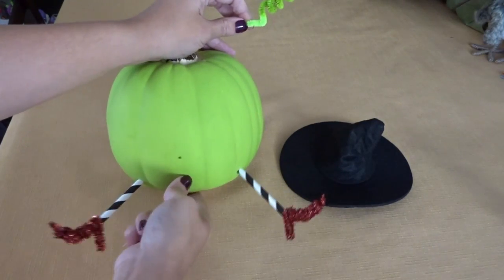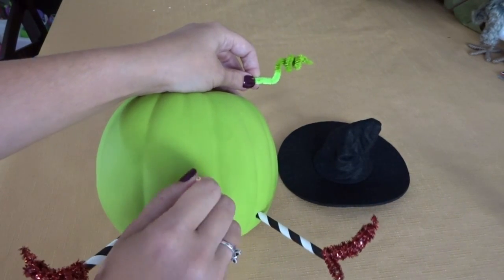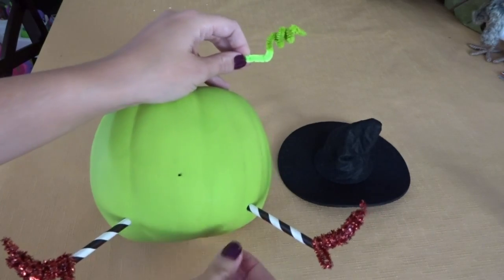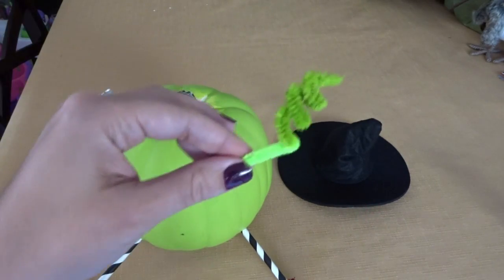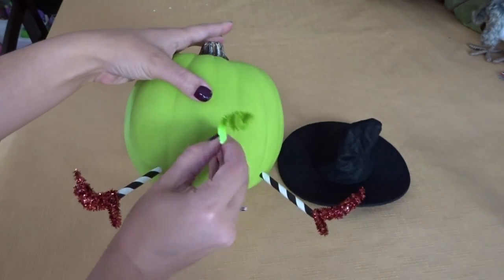Now for her nose, I used a toothpick to poke a hole in the center of the pumpkin. I used a pipe cleaner dipped in the same green paint so that it would match the rest of her face, and just inserted that into the hole I created.